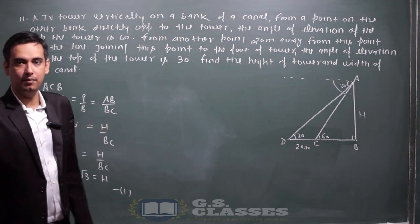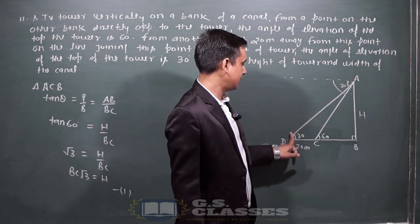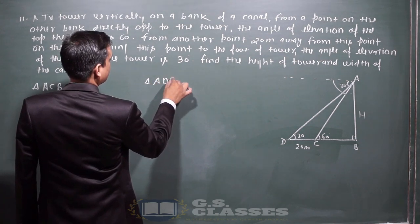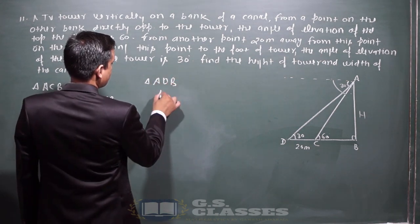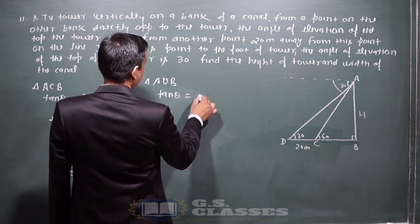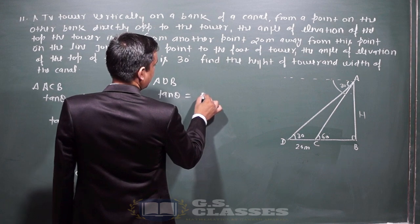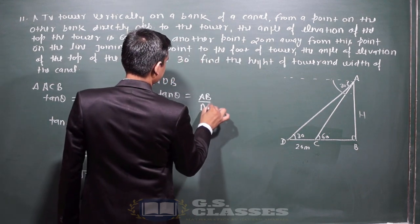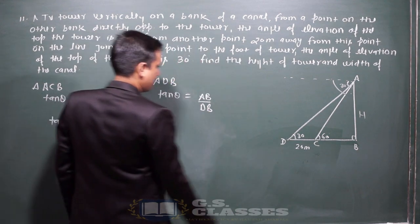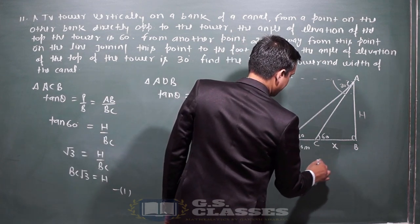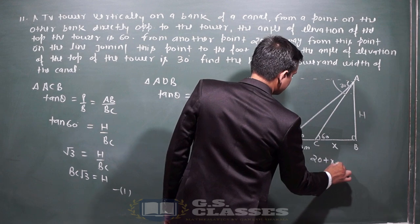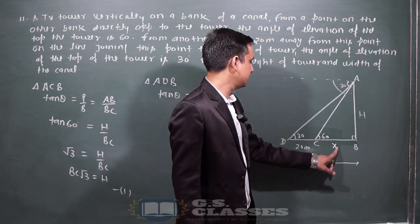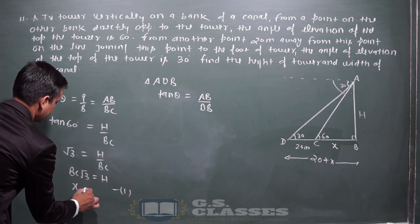Now after taking the small triangle, let's take the larger triangle ADB. In triangle ADB, tan theta = perpendicular upon base. Perpendicular is AB, base is BD. If I take BC as X for a moment, then BD would be 20 plus X. So wherever BC appears, I write X.